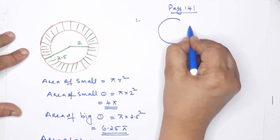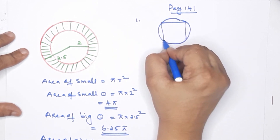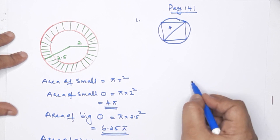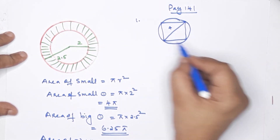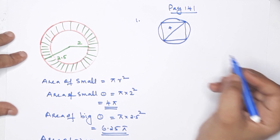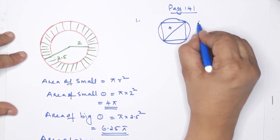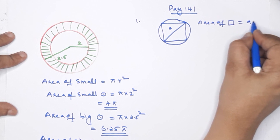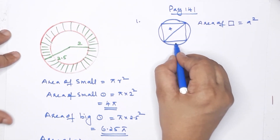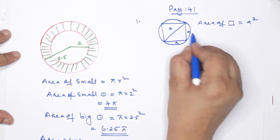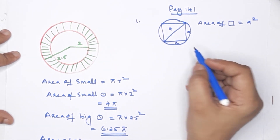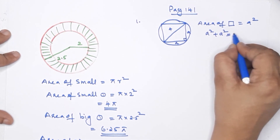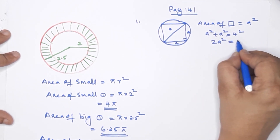This is a square with side 4.25 — we need to find the difference. For the area of the square: if the diagonal is 4, then using the ratio 1:1:√2, we get 2A² = 16.